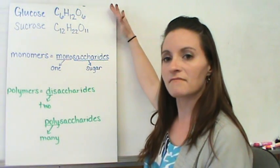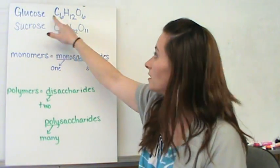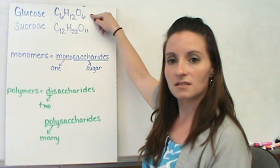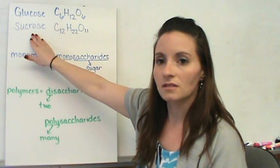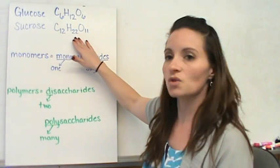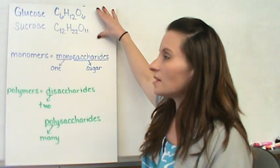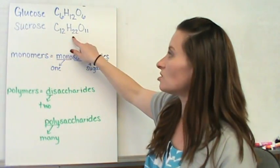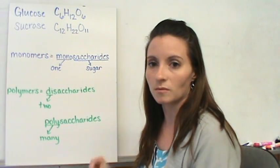Glucose is a carbohydrate; its chemical composition is C6H12O6. Sucrose, its chemical composition is C12H22O11. This one to two to one ratio of carbon, hydrogen, and oxygen is important in carbohydrates.